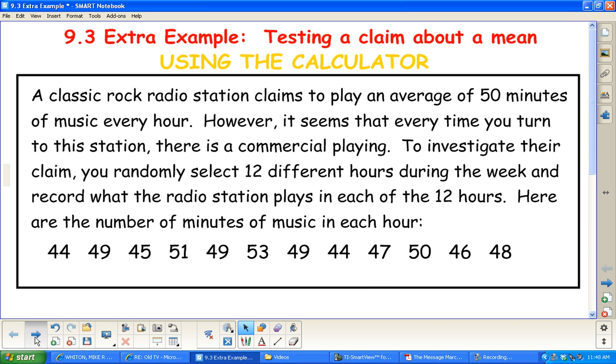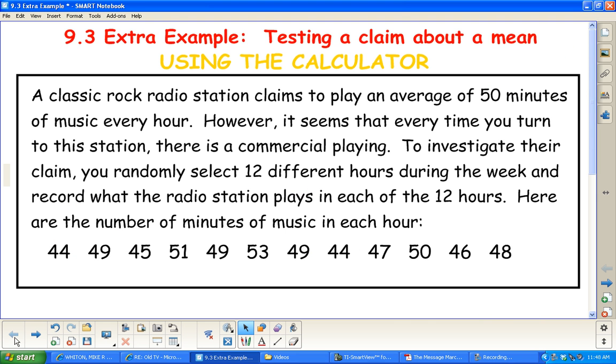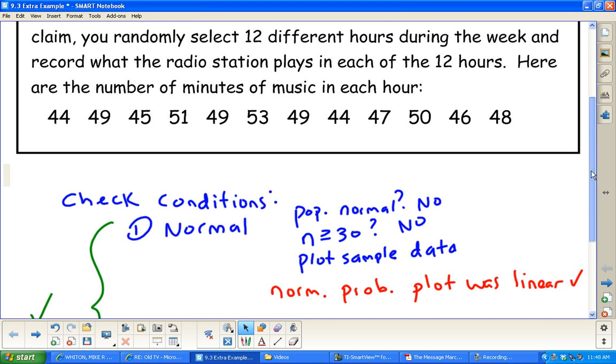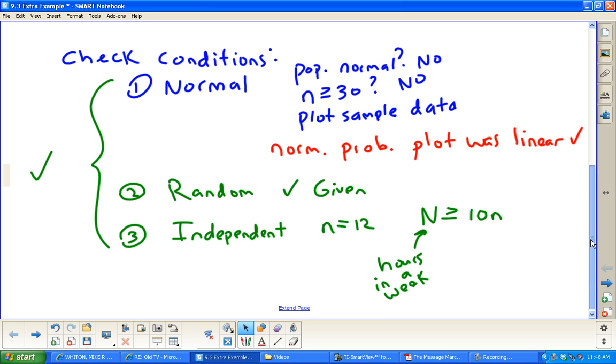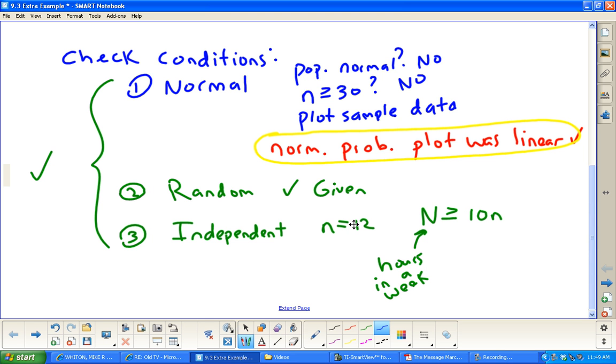Okay, so what we would do, write our statements. Actually, before that, we do have to check the conditions, and we did this on the previous video, so I almost forgot. Make sure you check that it's normal. We didn't know anything about the population being normal or the sample size was not greater than 30. So we do have to plot the sample data and check. And so when you plot the sample data, you're going to get a normal probability plot. So check the other video, we did that in a little more detail.